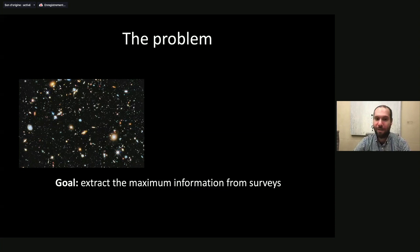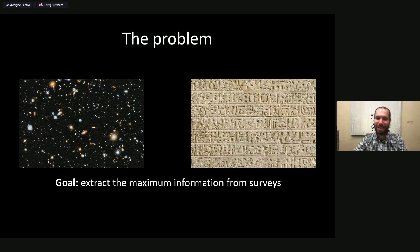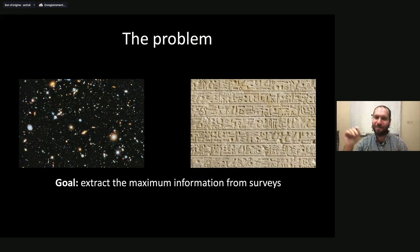Most people are still using the power spectrum, and we know that the power spectrum is suboptimal when you go to nonlinear scales. We also know that on nonlinear scales, there is a huge amount of cosmological information. The typical comparison I make in outreach talks is that, like one or two hundred years ago when we were looking at hieroglyphics, we were able to read some pieces but most of the message was missing. I believe in cosmology we are in a very similar situation.